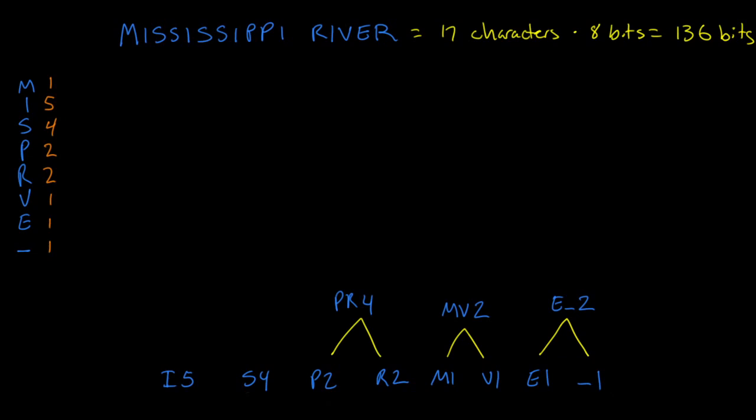And we just keep repeating. We've got two, two, four, four, and five. Let's do the two and two. This becomes M, V, E-space, four. Repeat again. Let's do P, R merged with M, V, E-space. And this is going to become P, R, M, V, E-space with a total of eight.